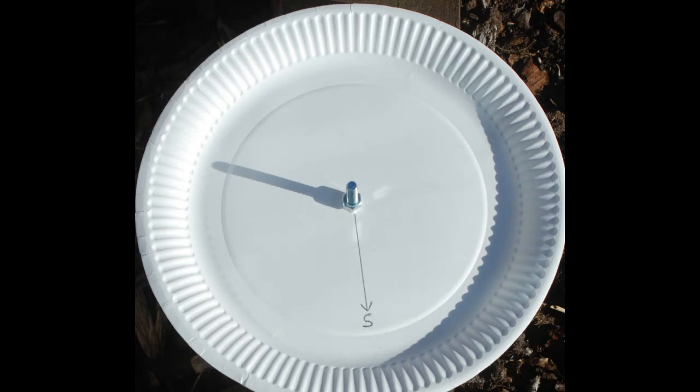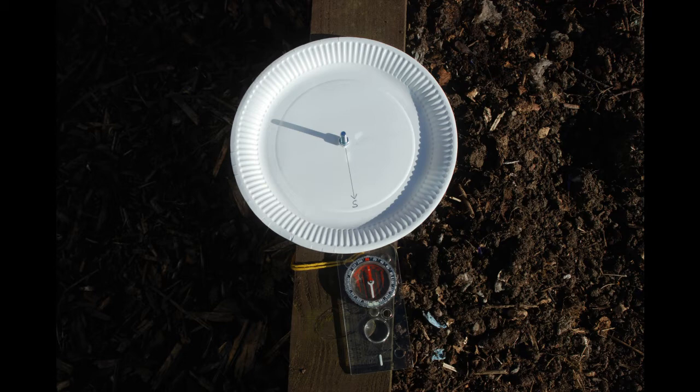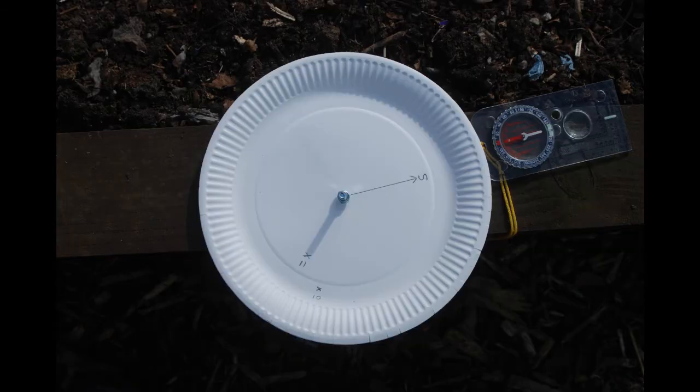But to remind you, we made a simple sundial by putting a bolt up through a paper plate. We marked a line for south. We then carefully set it up using a compass so that south pointed directly south, and then we recorded the point where the shadow fell on an hourly basis.